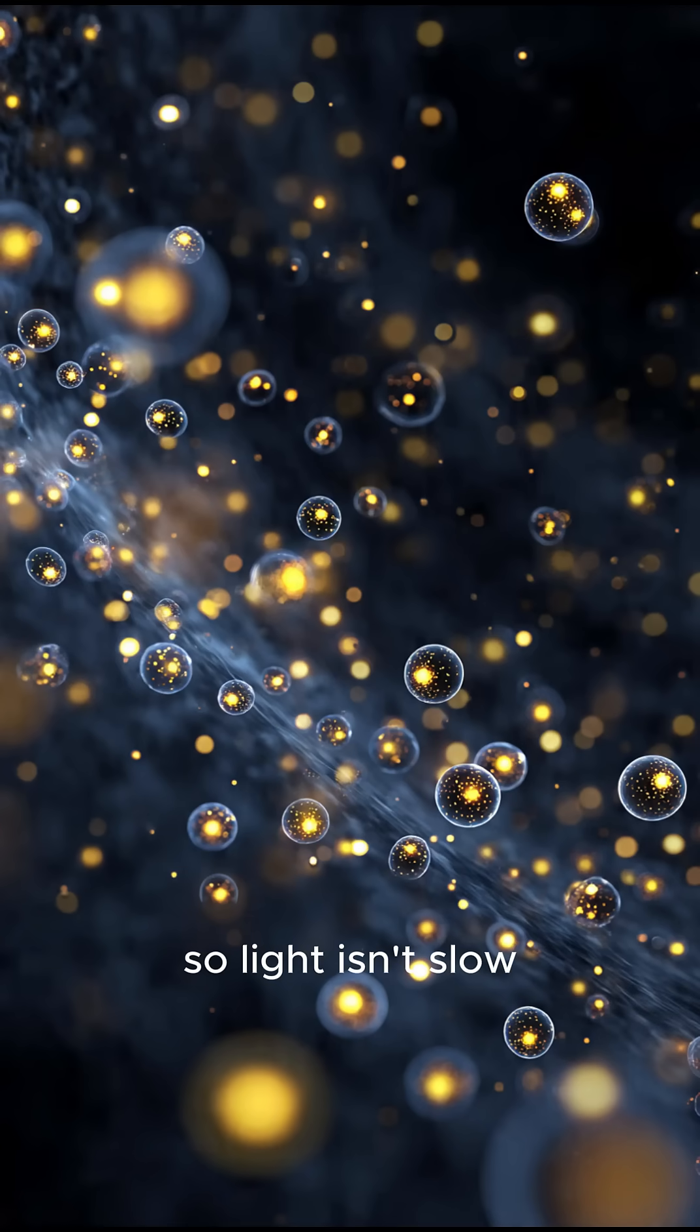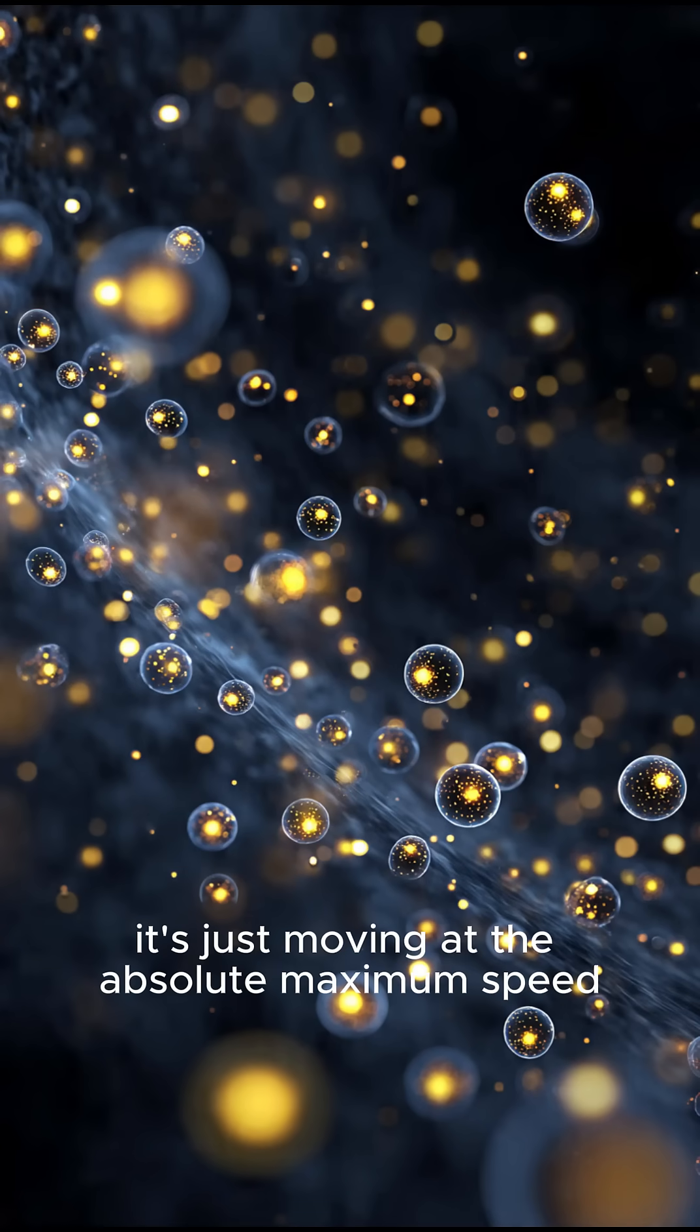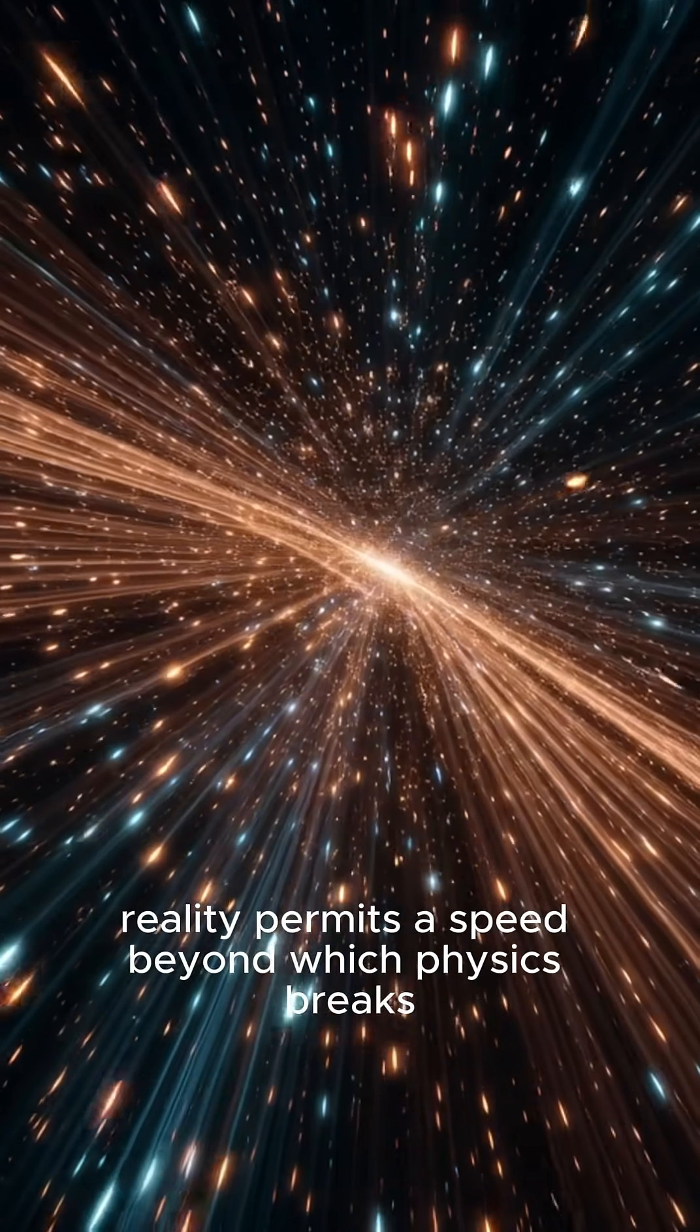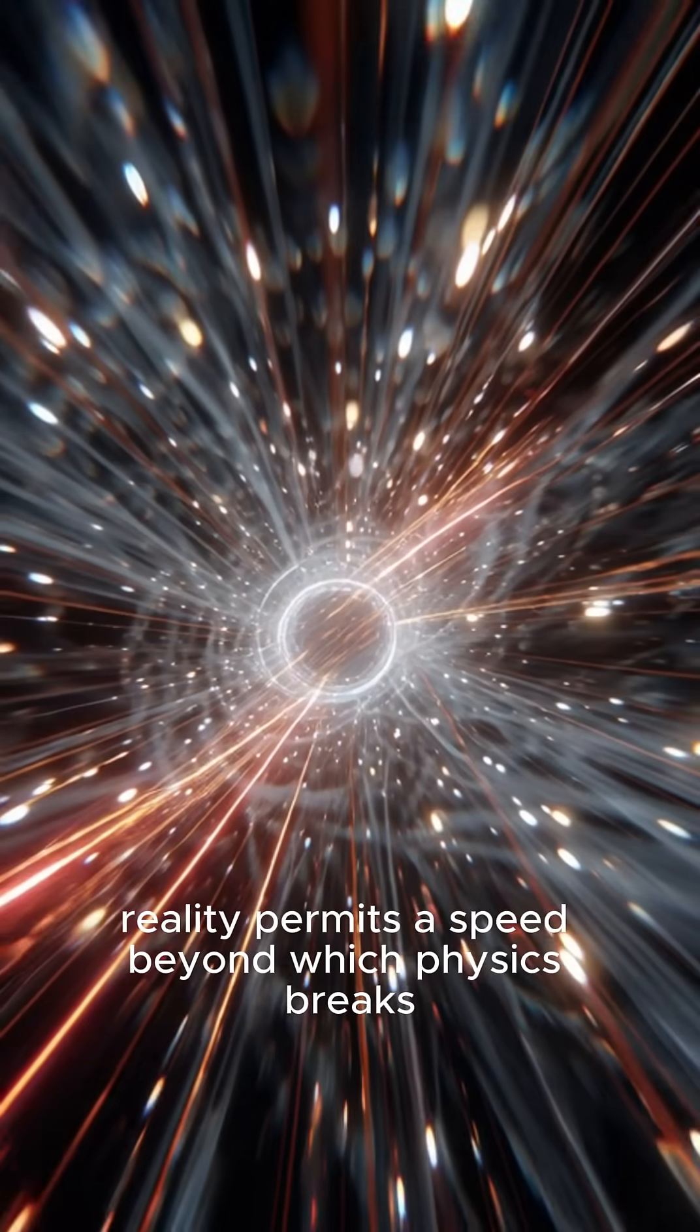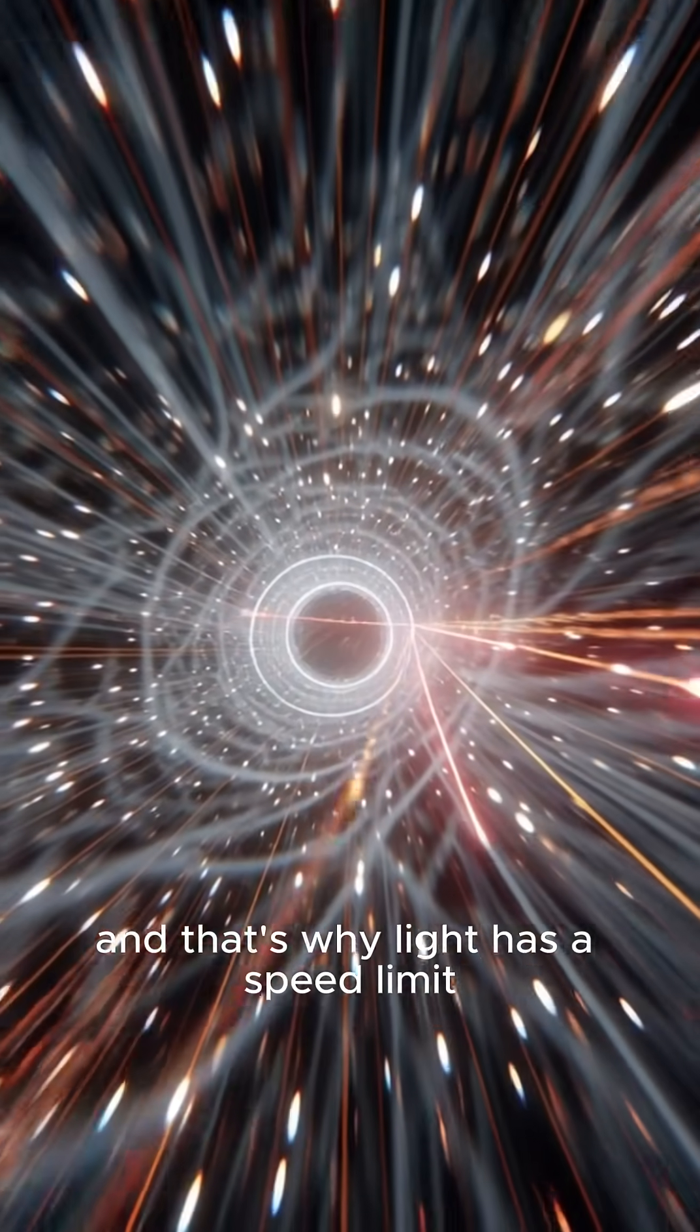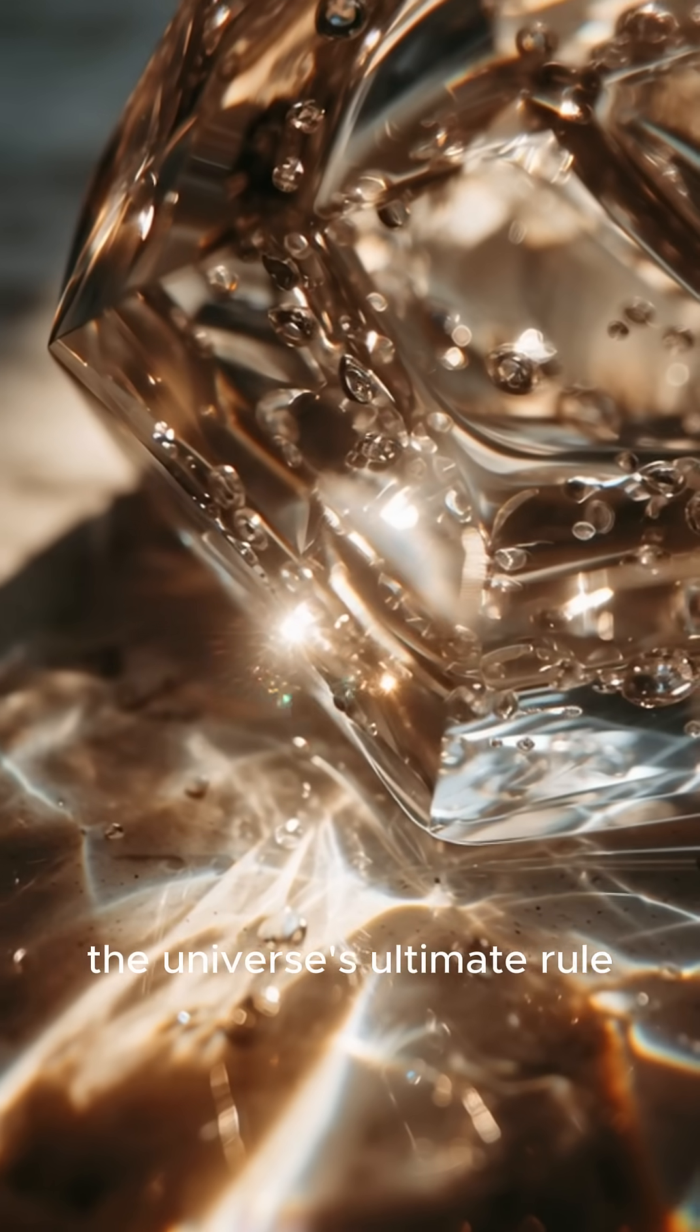So light isn't slow. It's just moving at the absolute maximum speed reality permits, a speed beyond which physics breaks. And that's why light has a speed limit—the universe's ultimate rule.